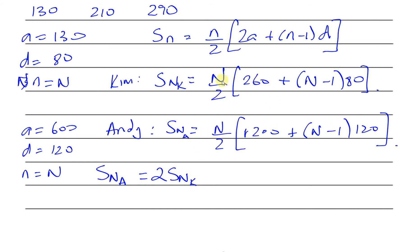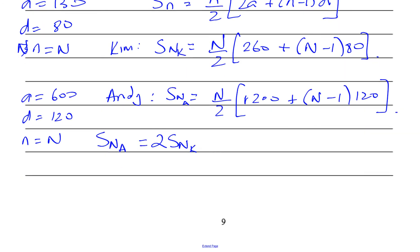We can form an equation. N/2 × [1200 + 120(N-1)] = 2 × N/2 × [260 + (N-1)80]. This amount that Andy paid equals twice Kim's amount.